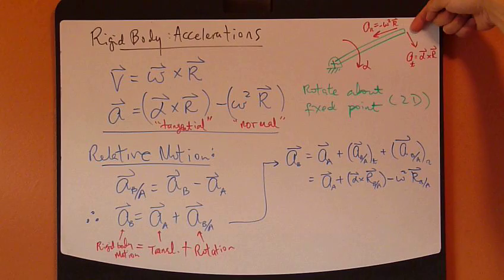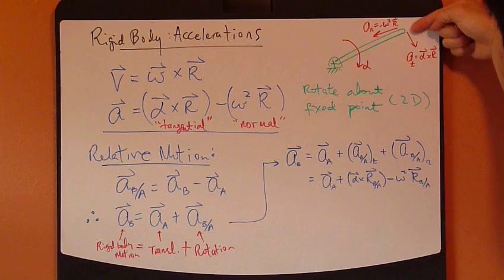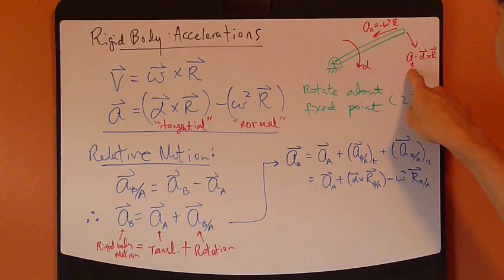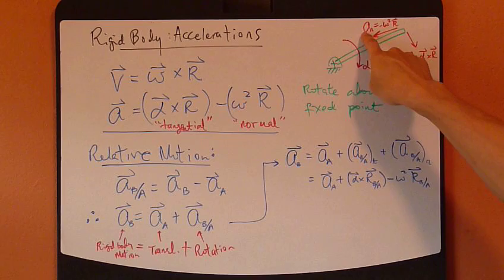Now the linear acceleration, we have two components, right? The first component, tangential component, is this right here, which is a_t. The second component, this right here, the normal component, we're going to call it a_n.